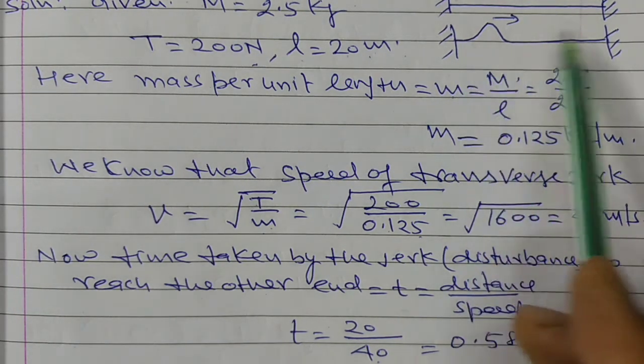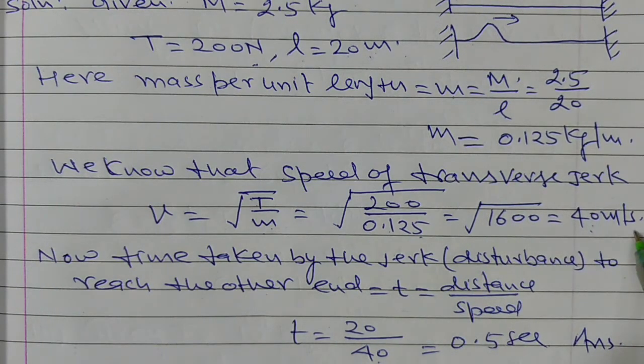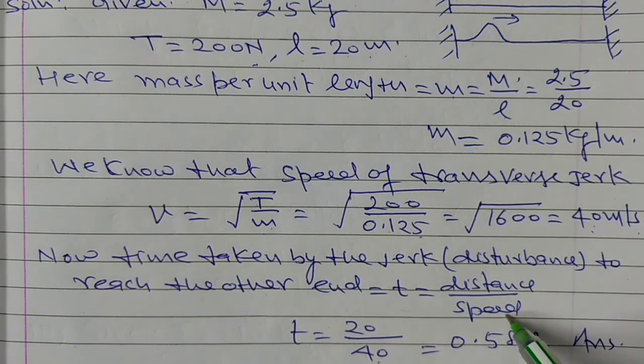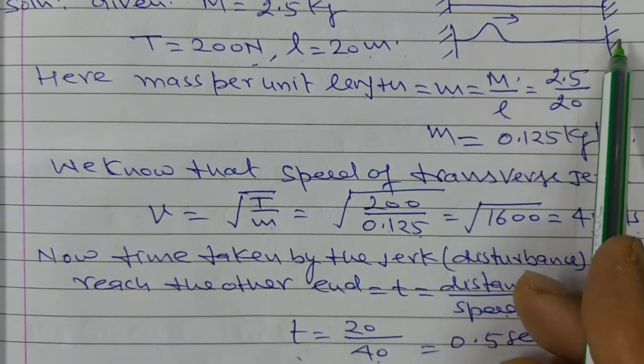So this is the answer of this problem. Time calculate karna tha, here se here tak jaane ka. Toh, pahle humne is ki speed calculate ki, 40 m per second. Aur, us ke baad phe distance upon speed is equal to time taken by the jerk to reach from one end to another end.